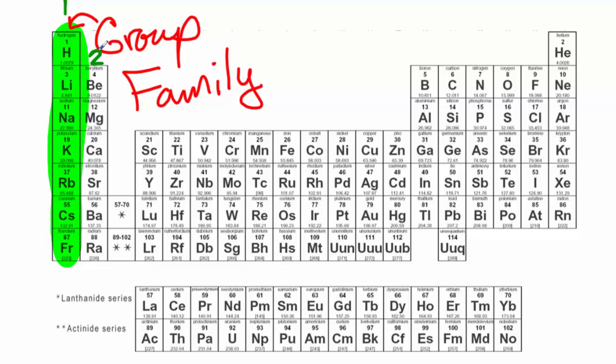Everything in this group or family has two valence electrons. Three, four, five, six, seven, eight. We know that these are the noble gases. They all act the same. They are very stable. They don't want any more electrons. So they all are inert. They act the same.